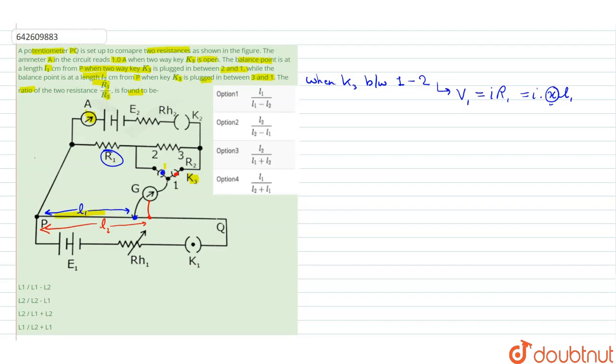If we talk about the next given condition, when K3 connected between 1 and 3, then at this situation V2 is equal to I into, now the two resistances will be involved because this is connected this way. This resistance and as well as this resistance which is R2 will be involved. So it will be I R1 plus R2.